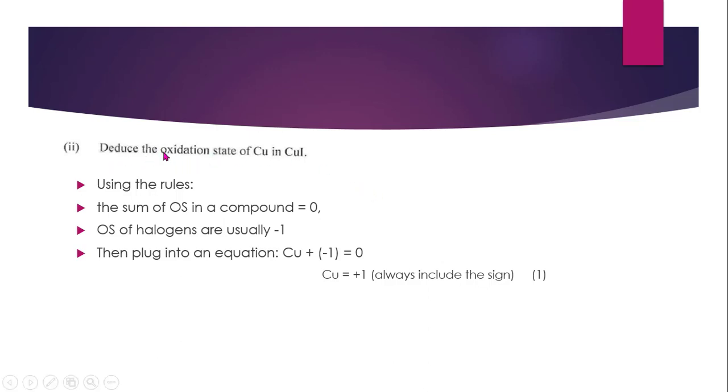Next question, deduce the oxidation state of copper in copper iodide. So we have two different rules we are going to use here. The sum of oxidation states in a compound equals zero. So the sum of the oxidation states of copper plus the oxidation state of iodine will equal to zero. The oxidation state of halogens are usually minus one. When we plug it into the equation, copper plus negative one, which is the oxidation state of iodide, it will add up to zero.